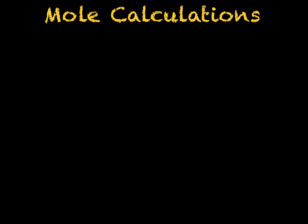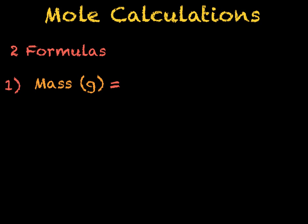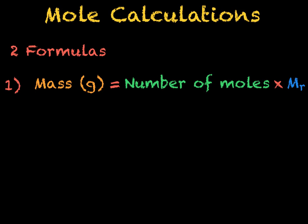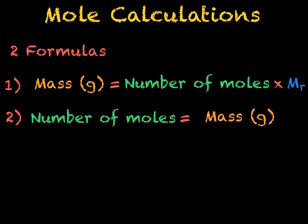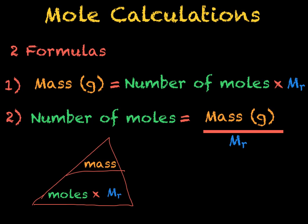In the exam, you need to be able to carry out mole calculations — to calculate the mass of a substance from the number of moles and vice versa. We need to know two formulas. The first: mass in grams equals number of moles times the MR. The second: number of moles equals mass in grams over the MR. We can rearrange these into a triangle giving us mass over moles times MR. Simply cover up whichever part you are trying to calculate — for example, covering the MR gives you mass over moles. We will now look at some calculation questions using this.